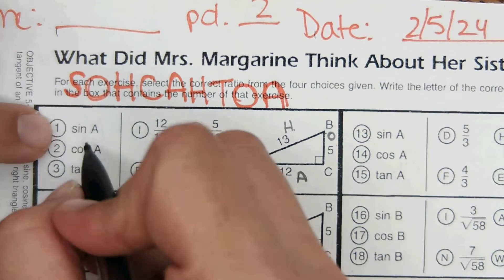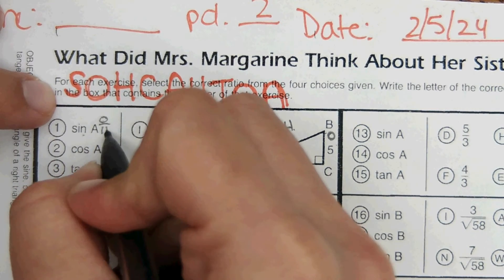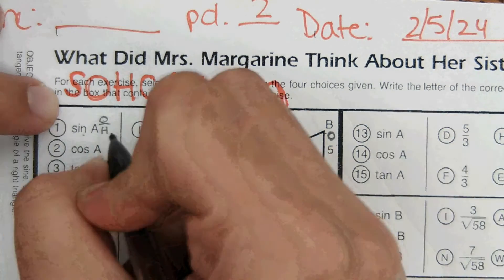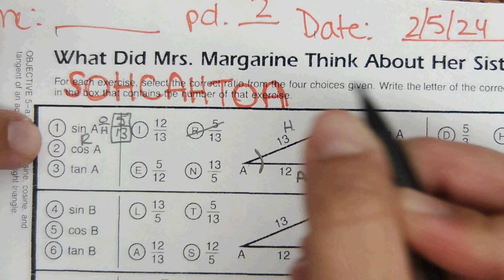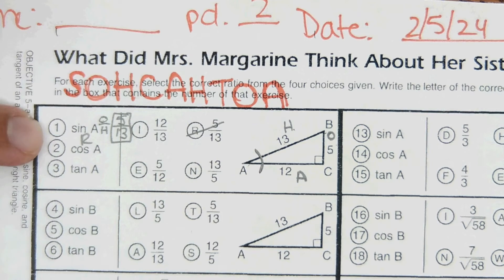So sine of A, sine is opposite over hypotenuse, so it would be 5 over 13, which is R. So 1R, and I filled it in.